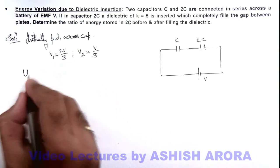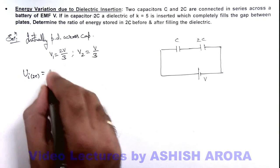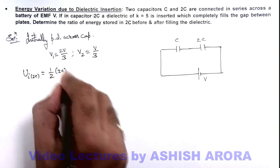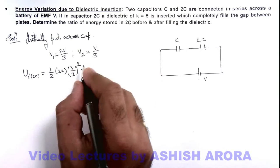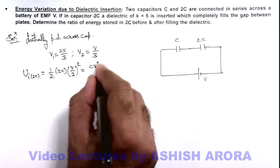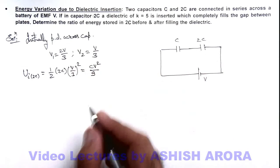So if we calculate the energy stored initially in capacitor 2C, this is half 2C multiplied by V by 3 whole square, that is half CV square. So this will give us CV square by 9. This is the initial energy stored in 2C.